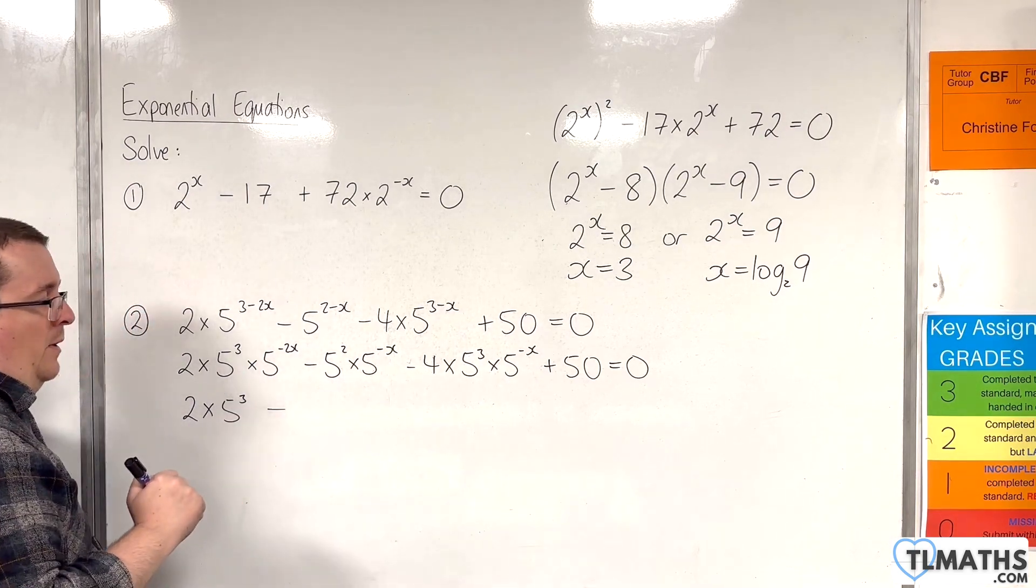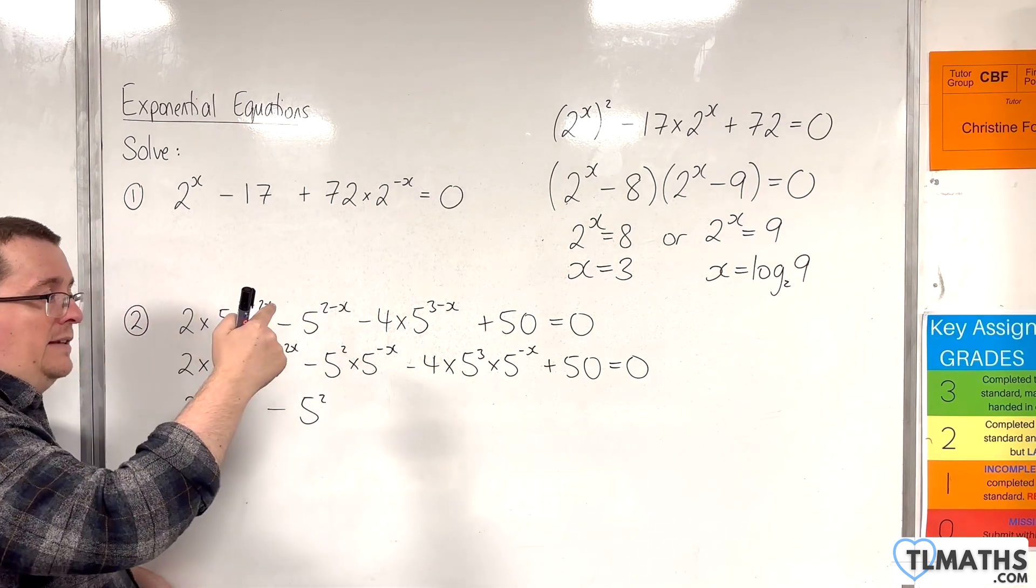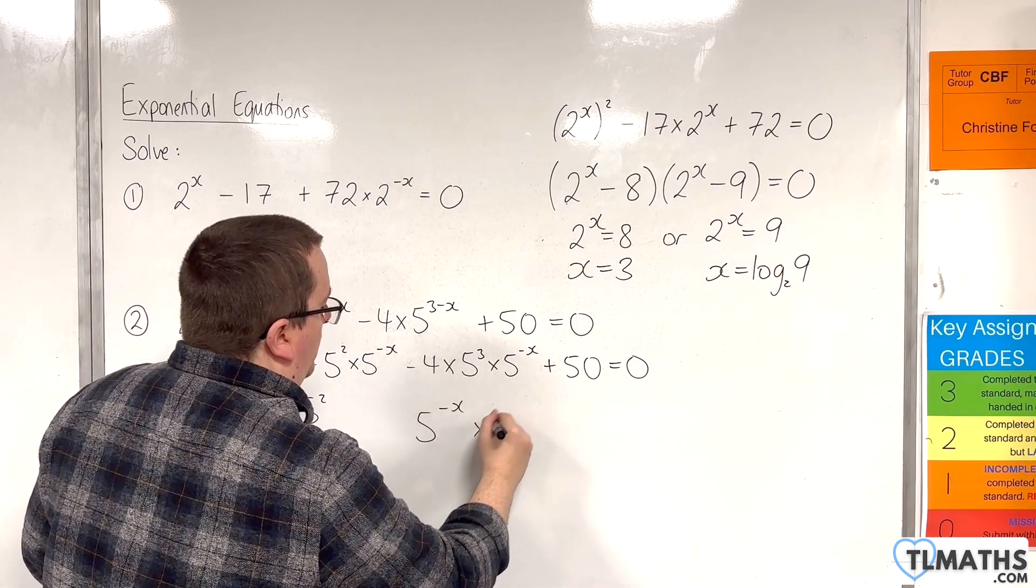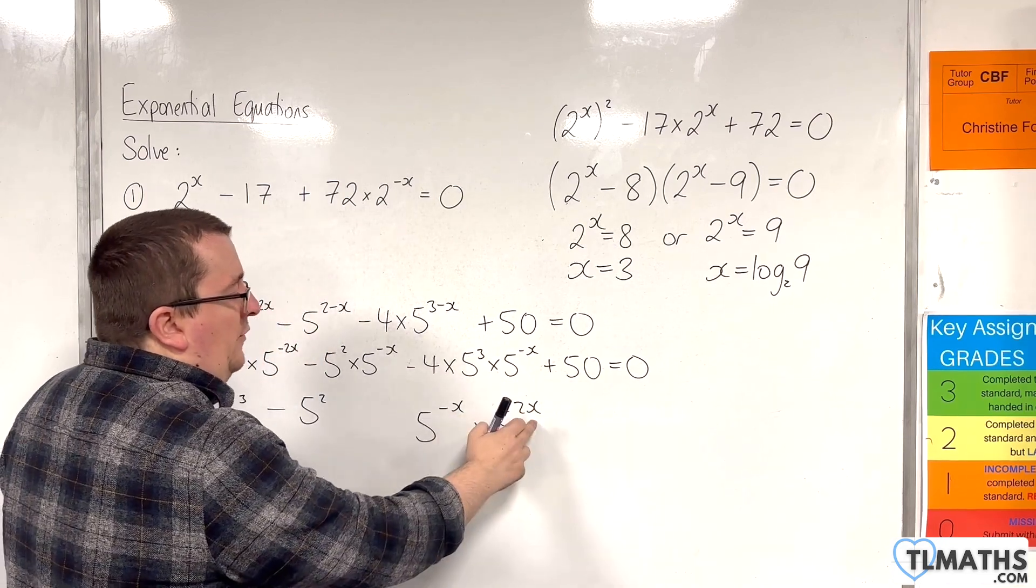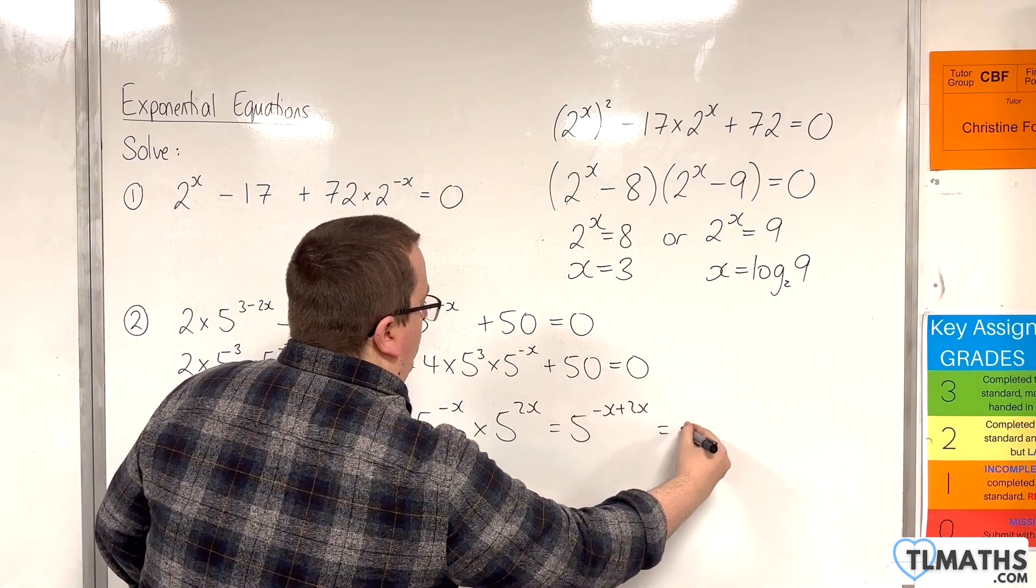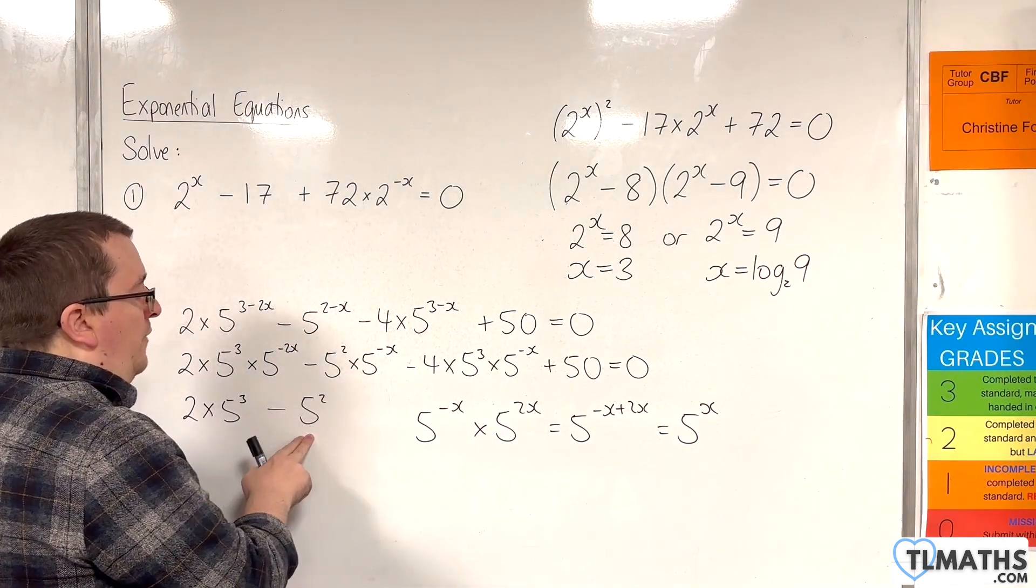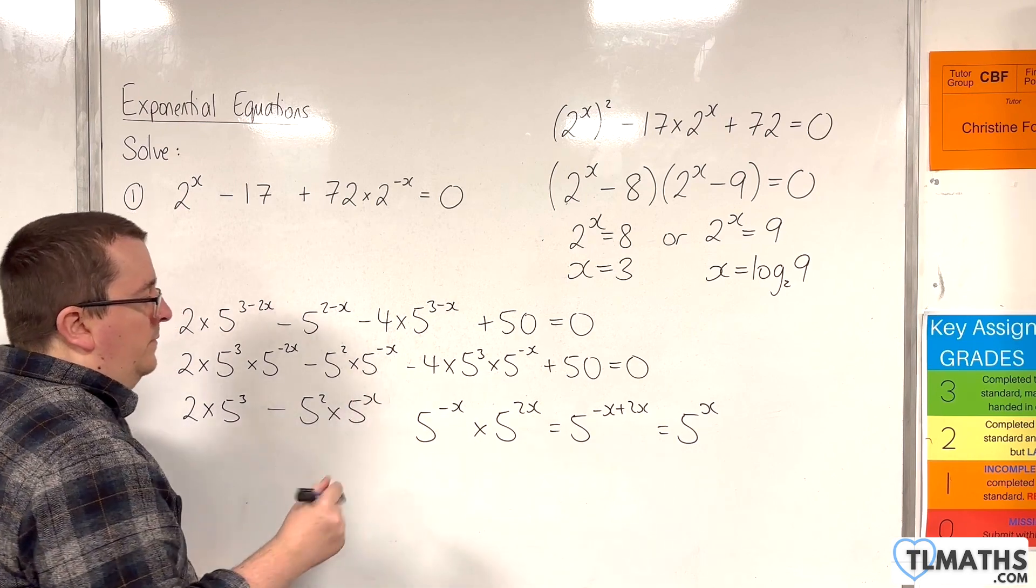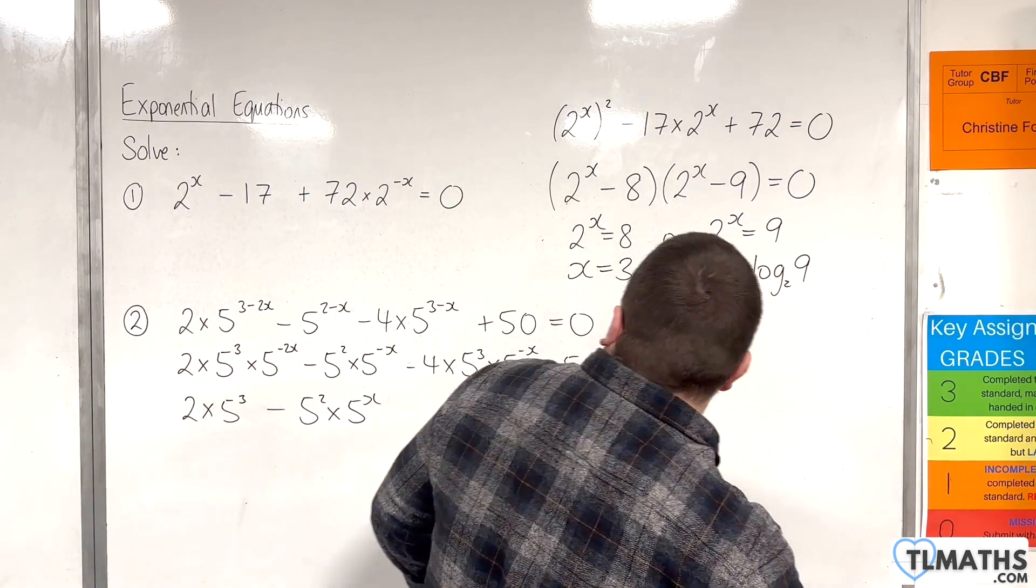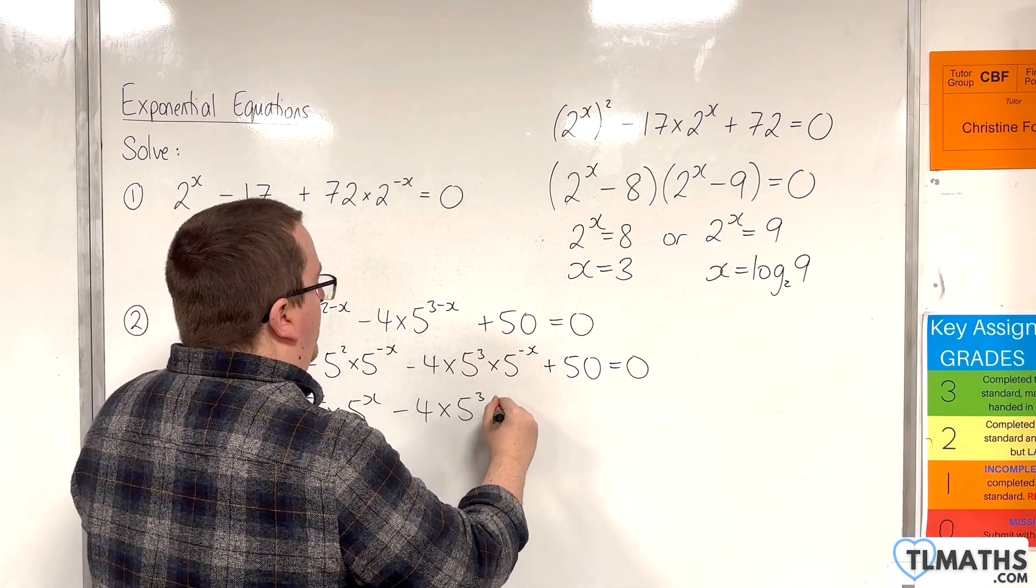Then, if I multiply this term by 5^(2x), I'll have the 5² and then this term will have 5^(-x + 2x). So, I'm multiplying this by this and the indices will add together like so. And so, that would just be 5^x. So, here we would have take away 5²·5^x. So, for the next term, likewise, we would have take away 4·5³·5^x.